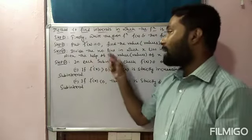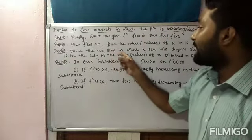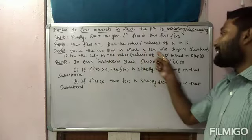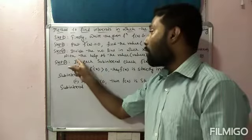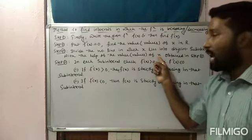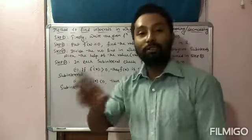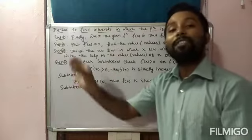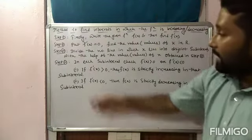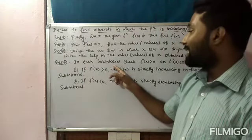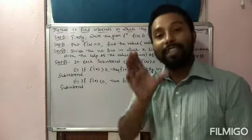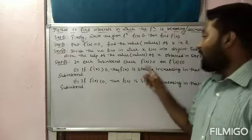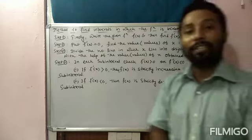Step 3: Divide the number line. Draw a number line and divide it into disjoint sub-intervals using the values of x obtained in Step 2. Place those x-values on the number line to get the sub-intervals.